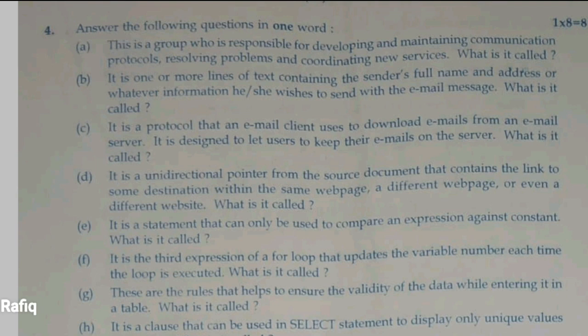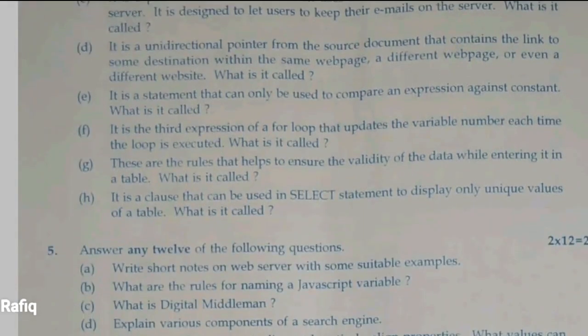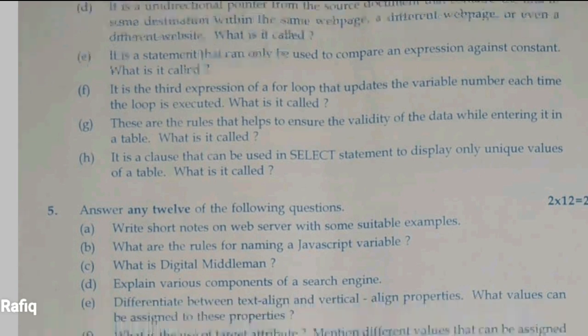One or more lines of text at the end of an email is called a signature. A protocol that allows an email client to download email from the email server is IMAP. A unidirectional pointer is a hyperlink. The statement that can only be used to compare an expression against a constant is from the omitted part, so it is not required. The third expression in a for loop is increment or decrement. Rules to ensure validity while entering data are called constraints. A clause used in a SELECT statement to display only unique values is DISTINCT.